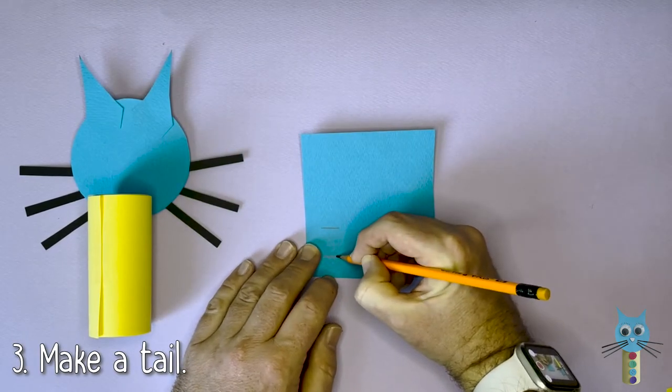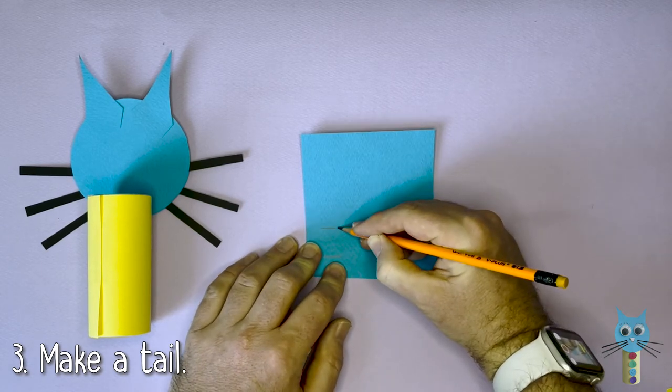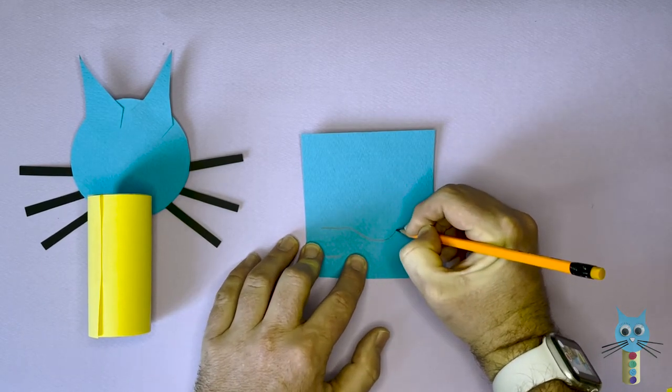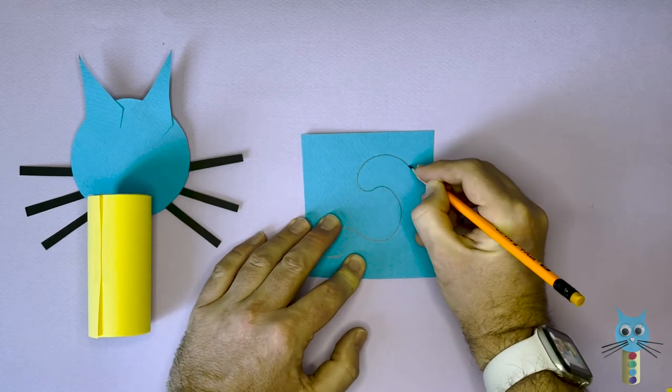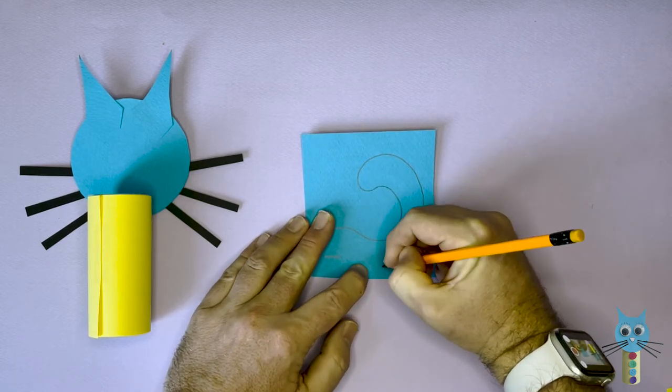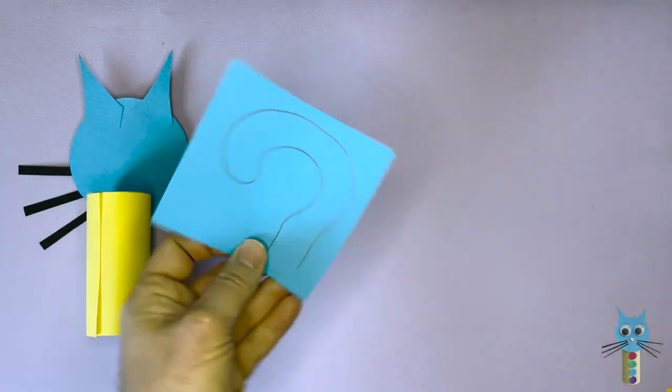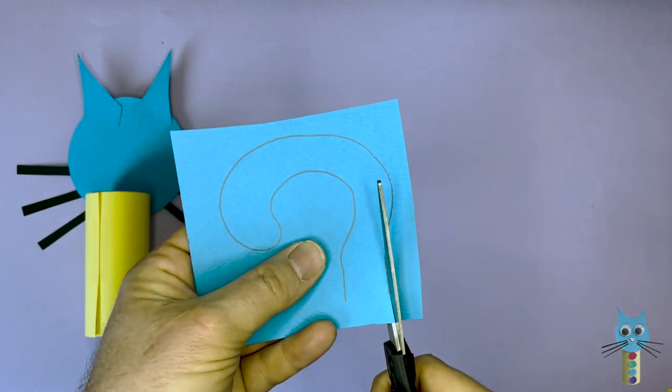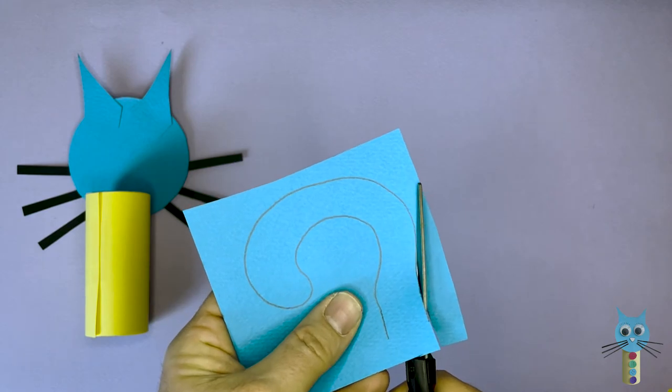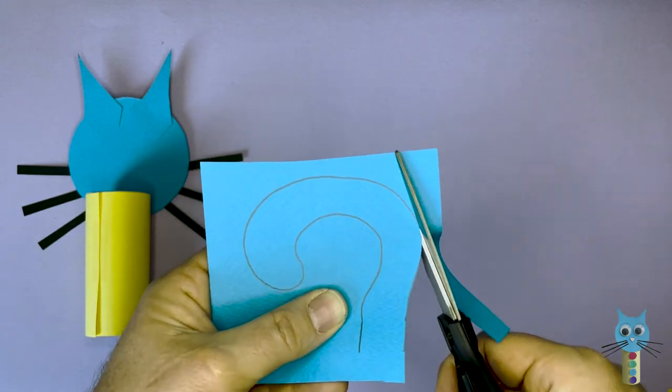So now I want to go ahead and draw a tail. Just take a piece of blue paper or card that is the same color and just draw out a shape similar like the one that I'm drawing here. You can make it any shape or size you want, small or big. Something like this will be perfect.